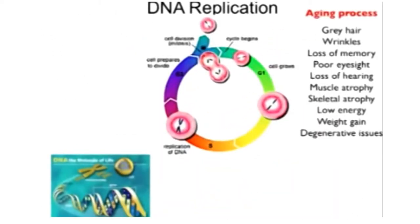So let's just follow this process in the life of a cell. This process that we're going to go through and the DNA and the shortening of the telomere bases, every one of these issues have been linked to that process. So loss of memory, wrinkles, gray hair, balding, muscle and skeletal atrophy, low energy, weight gain, incontinence, and the more serious degenerative issues like Parkinson's, lupus, diabetes, Alzheimer's. All of these different things have been linked to this process that I'm about to show you.